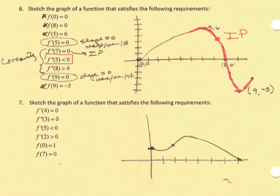So let's go on to number 7. Looking at number 7, it says sketch the graph of a function that satisfies these requirements. So again, start with your points. I'm starring the points right here. I've put f(0) equals 1. That's your y intercept. That's right there. And f of 7 equals 0. That's a root of the function, and that's right there.